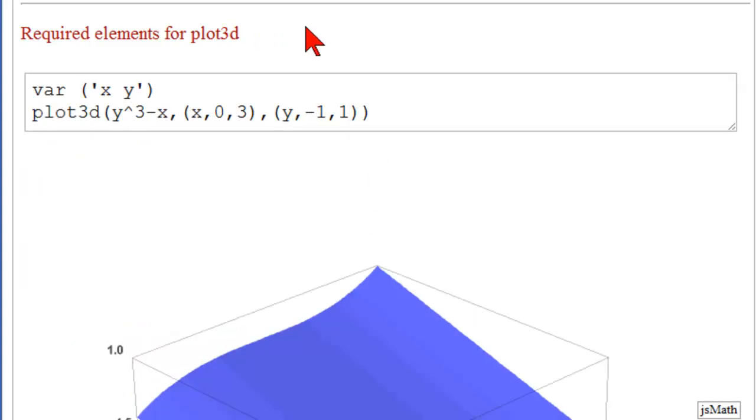In our first use of Plot 3D, we're going to use only the required elements. Here we've declared our variables x and y. And then here we have our Plot 3D, open parenthesis, a function in two variables. Here it's y cubed minus x. Our first variable is x, with its range 0 to 3. So that will be on the left axis.